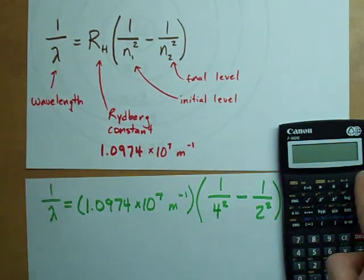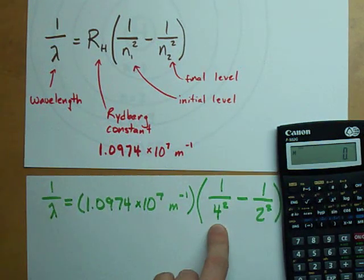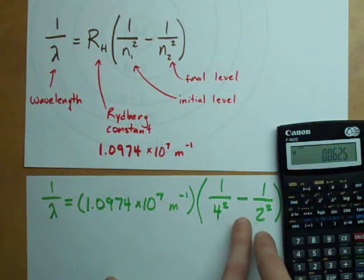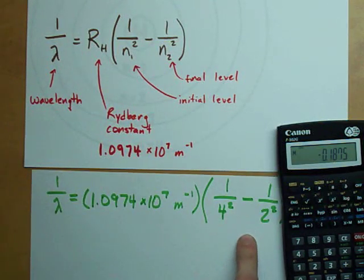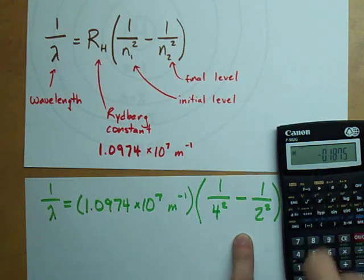Can you see that? Yes you can. I'm going to start with this here. One divided by sixteen minus one divided by four gives me negative 0.1875.